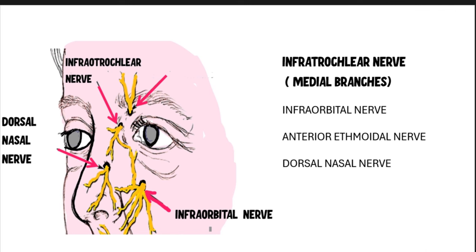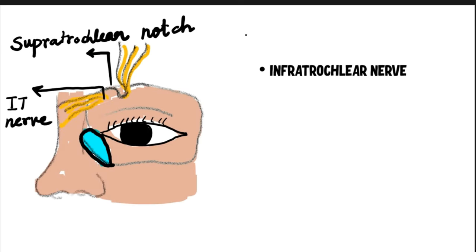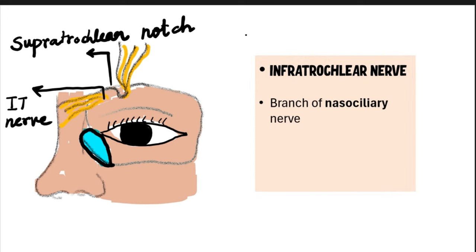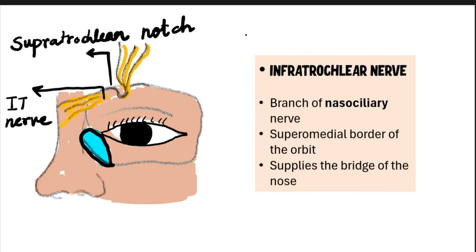Let us systematically examine each of these nerve blocks, beginning with the infratrochlear nerve. The infratrochlear nerve is a branch of the nasociliary nerve, located at the superior medial margin of the orbital cavity. This nerve provides sensory innervation to the bridge of the nose. One should palpate the supratrochlear notch first; the infratrochlear nerve resides approximately halfway between the inner canthus and the supratrochlear notch.